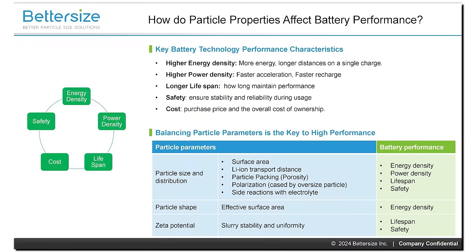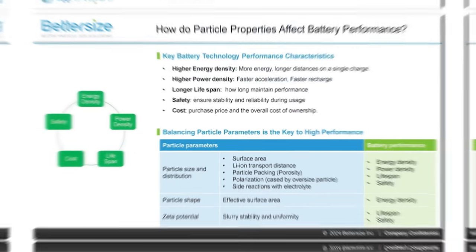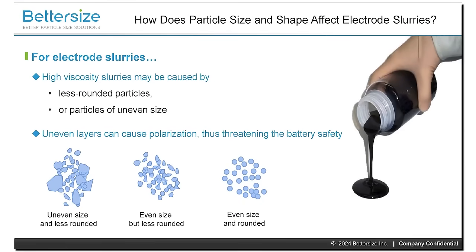Particle size affects electrode packing density, surface area, and ion diffusion rates. Particle size and shape also affects the fluoride's rheological properties.